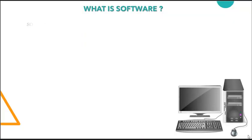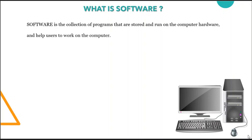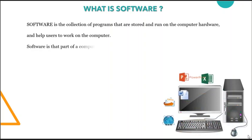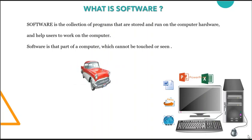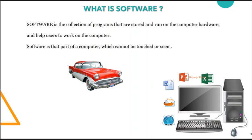Software is the collection of programs that are stored and run on the computer hardware. Software helps users to work on the computer. Software is the part of a computer which cannot be touched or seen. Basically, a computer is a machine that does not possess any intelligence of its own. A computer without instructions is like a car without a driver — it requires a set of instructions given by a user to work. These sets of instructions are called programs, which are written in computer languages. Software gives life to the hardware and is popularly referred to as the soul of the computer system.